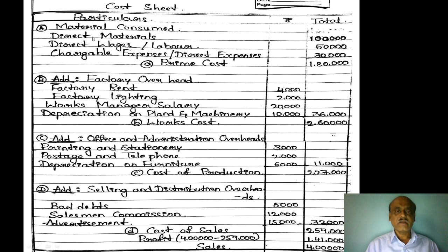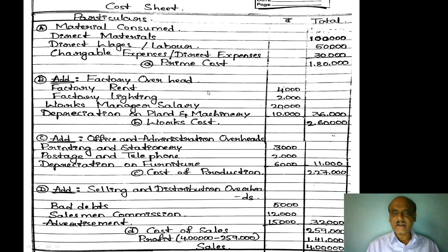The cost sheet for the year ending — particulars and amount. First: direct material consumed 1,00,000. Add direct wages 50,000. Add chargeable expenses 30,000. Total prime cost: 1,80,000. Add factory overhead: factory rent 4,000, factory lighting 2,000, works manager salary 20,000, depreciation on plant and machinery 10,000. Total factory overhead: 36,000. Works cost: 2,16,000.